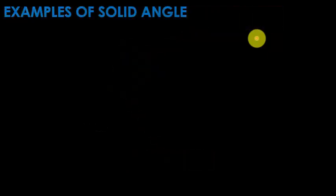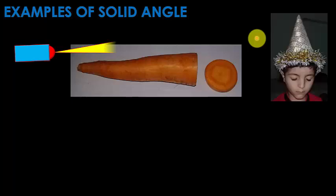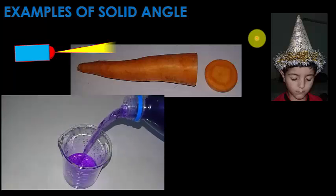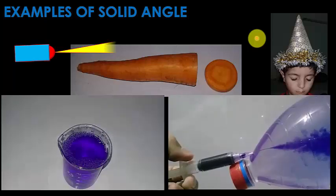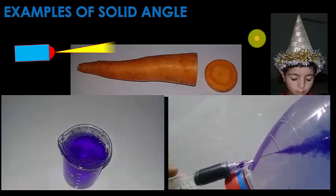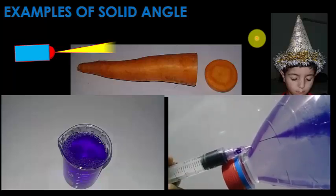Now we discuss examples of solid angle. Light emitting from a torch is in the form of a solid angle. Some vegetables like carrot are found in the form of a solid angle. A bird's cape is found in the form of a solid angle. Falling water from a certain height is found in the form of a solid angle. Similarly, a fluid coming out from a syringe is in the form of a solid angle.